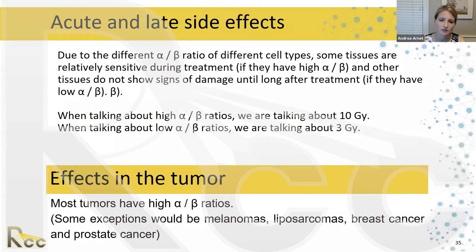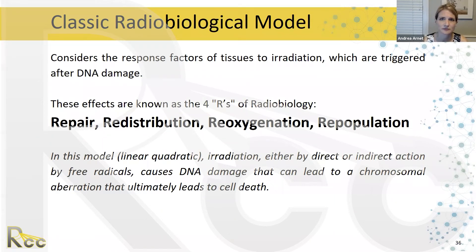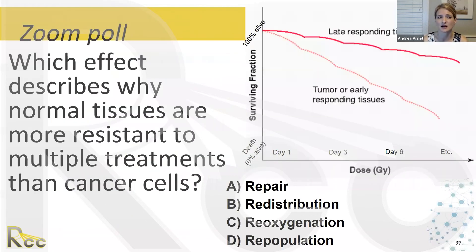Most tumors have a high alpha-beta ratio, with exceptions including melanomas, liposarcomas, prostate cancer, and some breast cancers. In the classic radiobiologic model, the response factors of tissues to radiation after DNA damage are known as the four R's of radiobiology: repair, redistribution, reoxygenation, and repopulation. In the linear quadratic model, irradiation by direct or indirect action by free radicals causes DNA damage leading to chromosomal aberration and ultimately cell death.